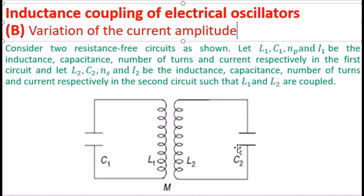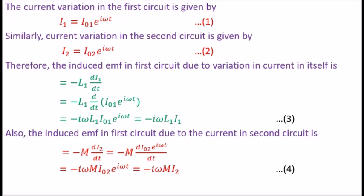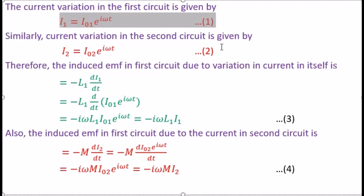We want to study how the current amplitude will vary. The current variation is sinusoidal, similar to what we discussed for two coupled pendulums, where the variation was also sinusoidal. So the current variation is sinusoidal.